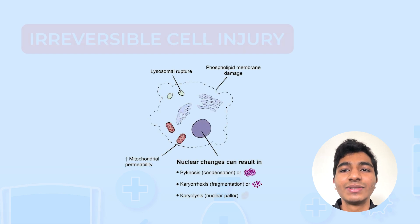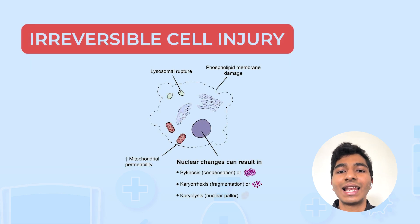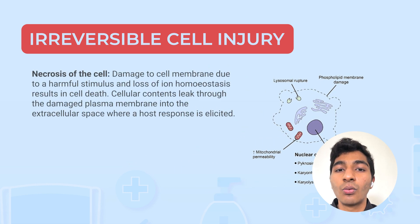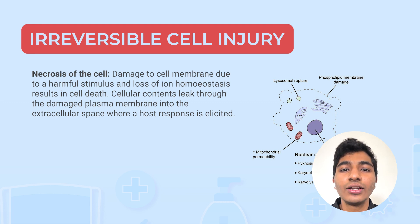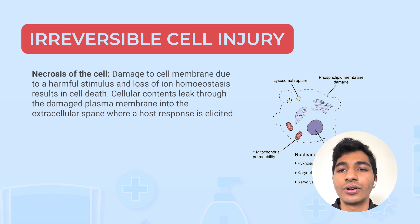On the contrary, irreversible cell damage has two main components: necrosis and apoptosis. Necrosis is damage to the cell due to a harmful stimulus, a loss of ion homeostasis resulting in cell death. In necrosis, cellular contents actually leak through the plasma membrane, and once these contents leak through the plasma membrane, an inflammatory response is therefore set in order.